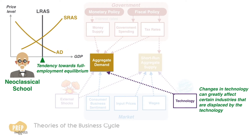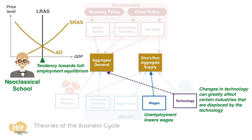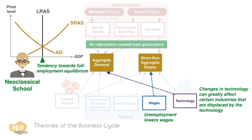Nevertheless, neoclassical economists believe that such recessions are short-lived, as unemployment will lower wages, shifting the SRAS curve to the right, such that the economy is back to its long-run equilibrium. No intervention is needed from the government.